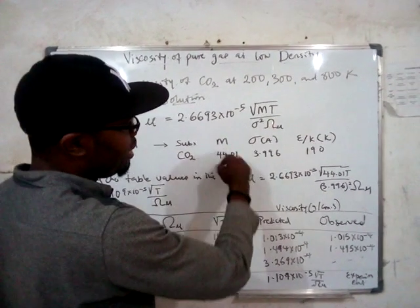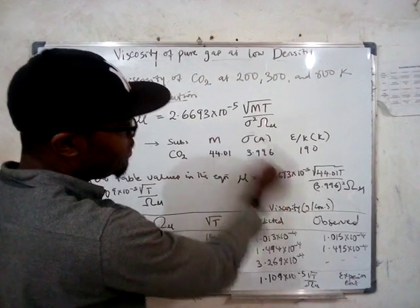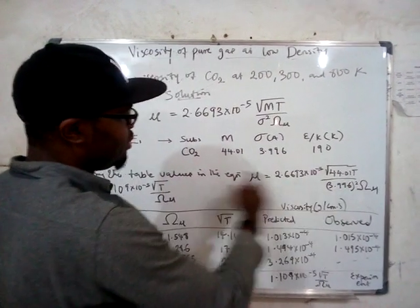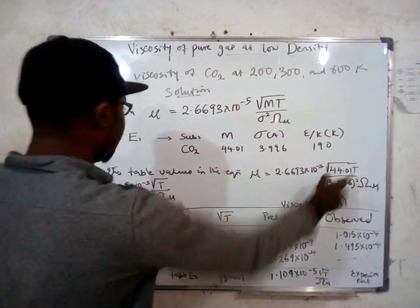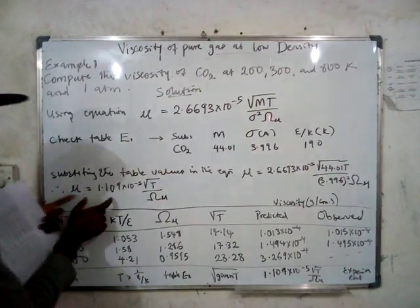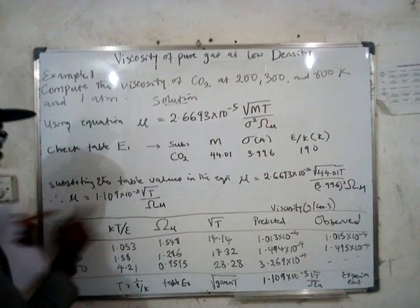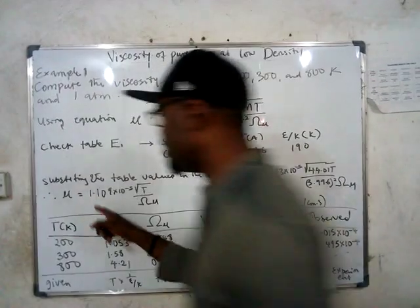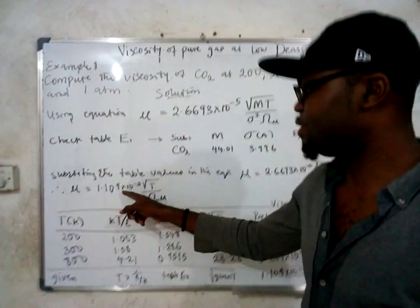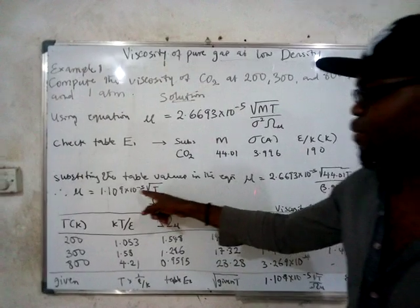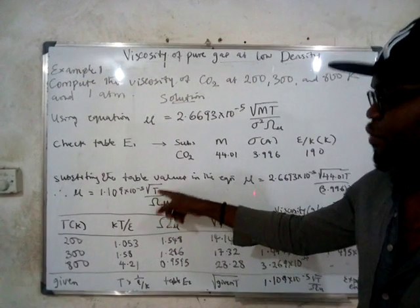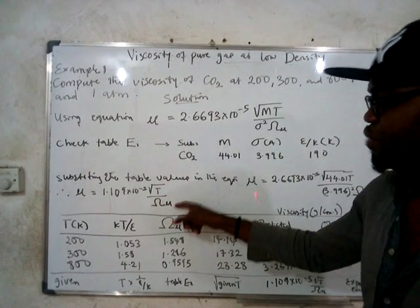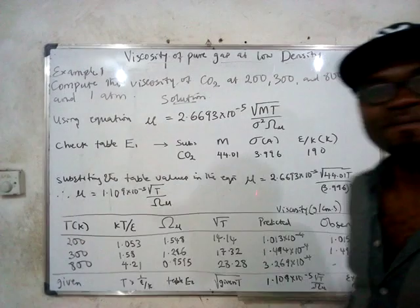Now substitute back into the equation. In place of M (molecular weight) put 44.01, and in place of σ put 3.996. When you substitute these, the equation reduces to: μ = 1.10995 × √T / Ω_μ. This is the working equation you now have for CO2.